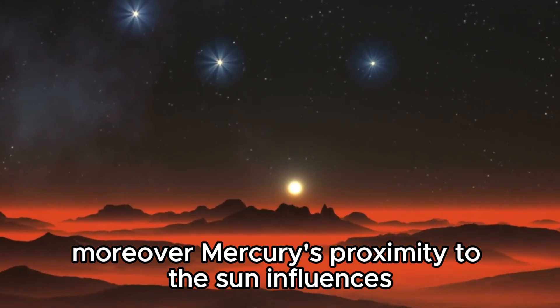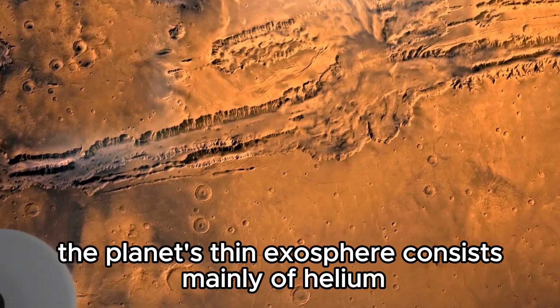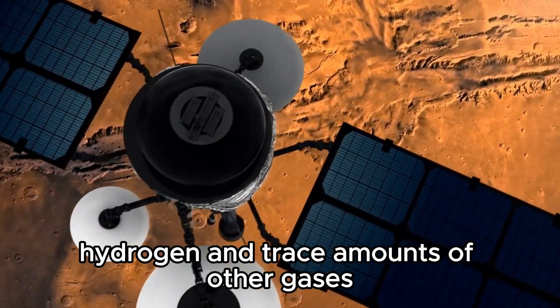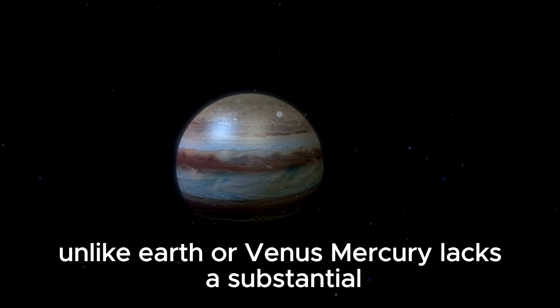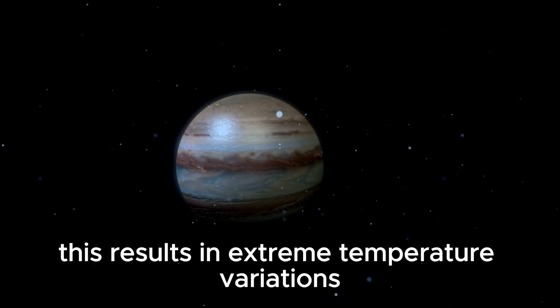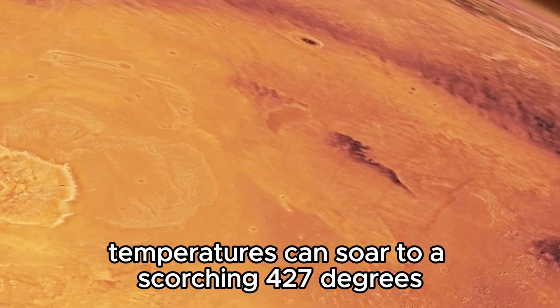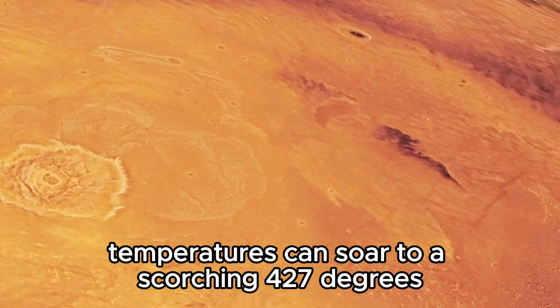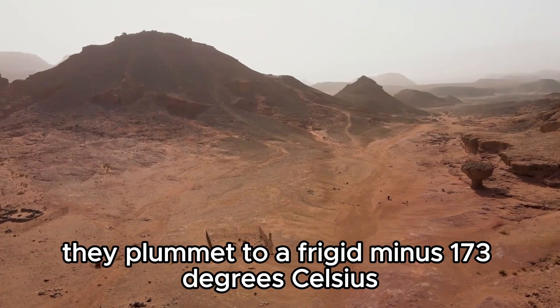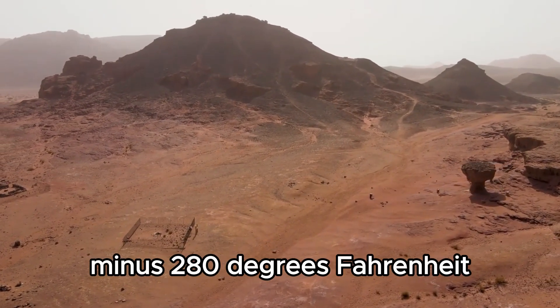Moreover, Mercury's proximity to the Sun influences its environment in unique ways. The planet's thin exosphere consists mainly of helium, hydrogen, and trace amounts of other gases. Unlike Earth or Venus, Mercury lacks a substantial atmosphere to regulate its surface temperature. This results in extreme temperature variations. During the day, temperatures can soar to a scorching 427 degrees Celsius, while at night they plummet to a frigid minus 173 degrees Celsius.